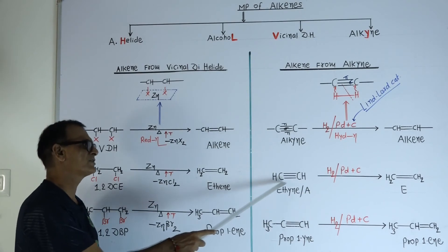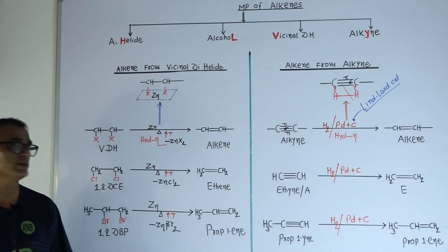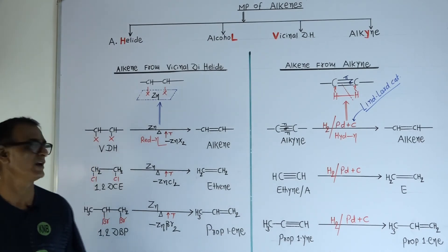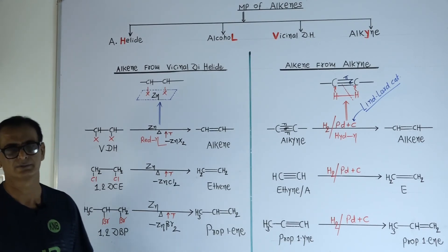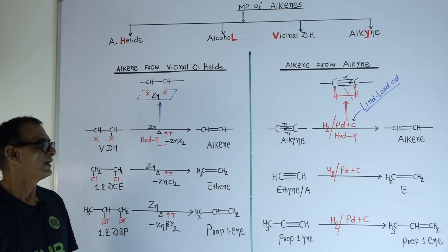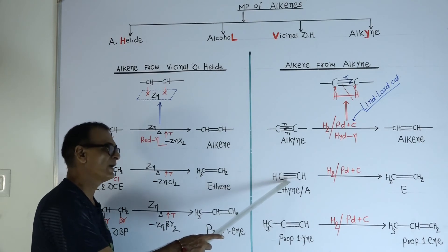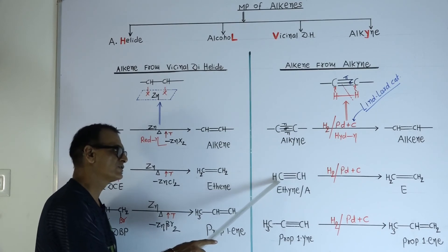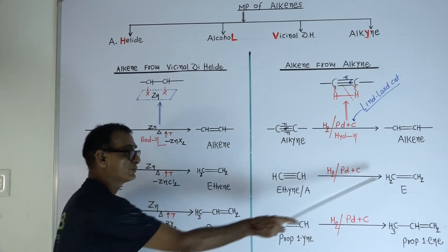Illustration: CH triple bond CH — its name is ethyne. Its commercial name is acetylene. When acetylene is heated with hydrogen in the presence of catalyst like palladium plus carbon — Lindlar catalyst — one pi bond will break, and one hydrogen atom will add to each carbon. So we get CH₂ double bond CH₂. This is ethene.